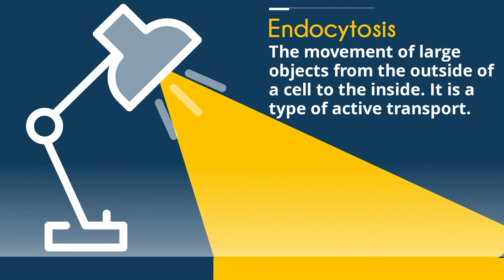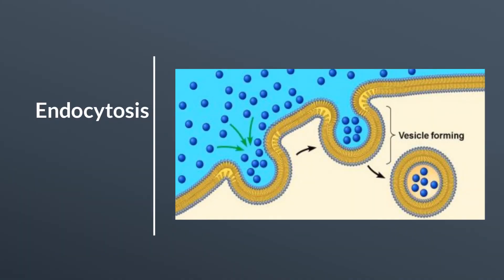And finally, endocytosis: the movement of large objects from the outside of a cell to the inside of a cell. It's a type of active transport.